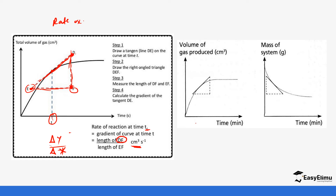If you are given two time values, such as t1 and t2, the same method applies. You extrapolate to those specific points on the graph for both t2 and t1, obtaining two values on the y-axis and two values on the x-axis, then apply change in y over change in x. Let's do some examples so that you can see.